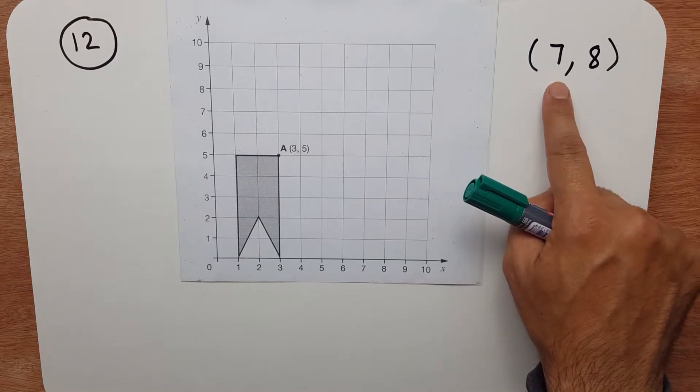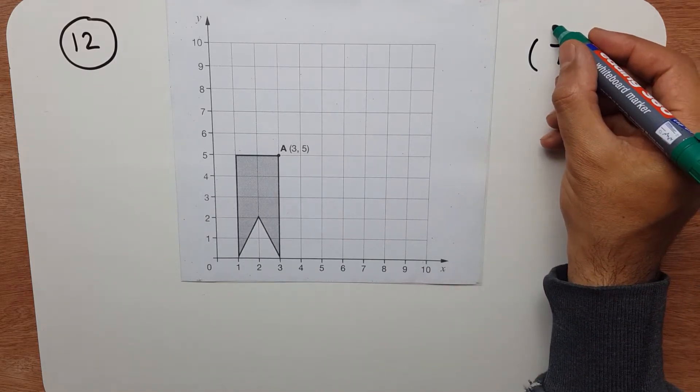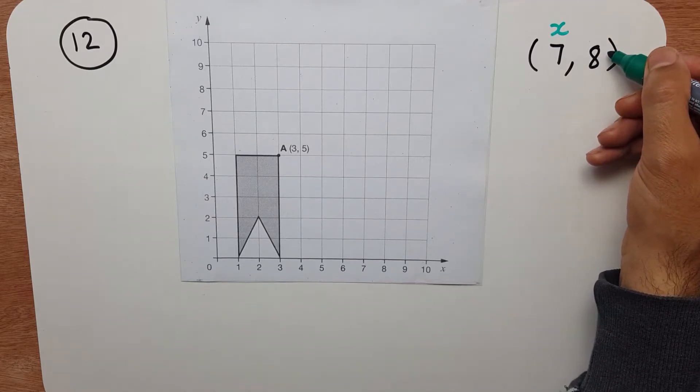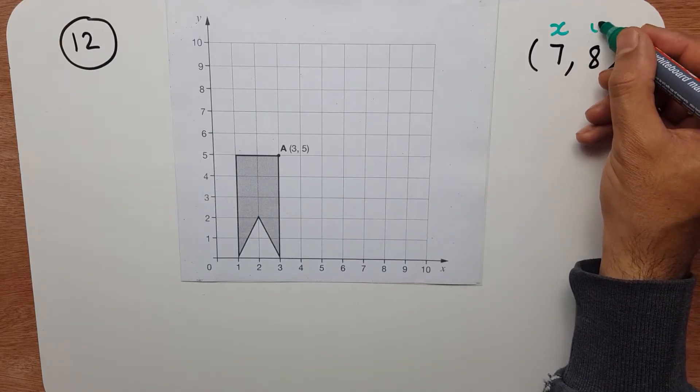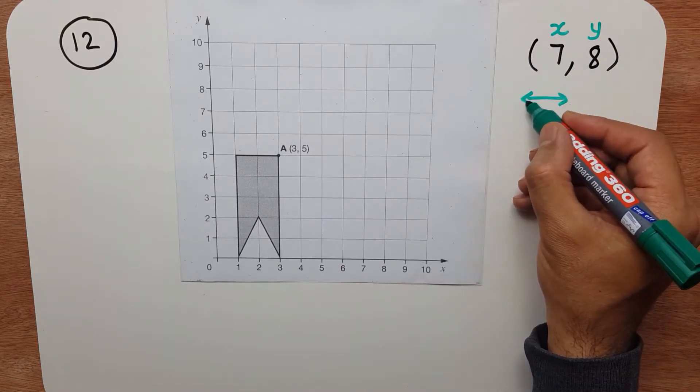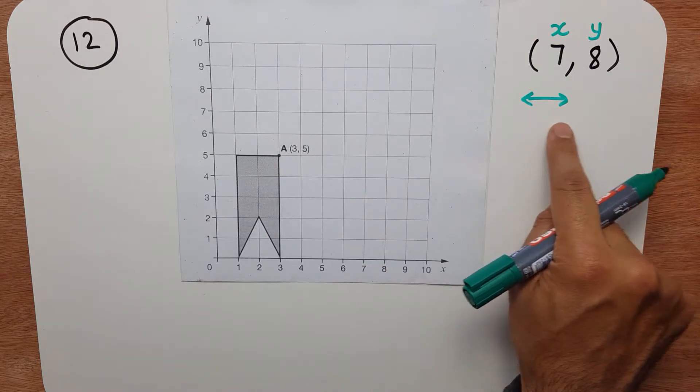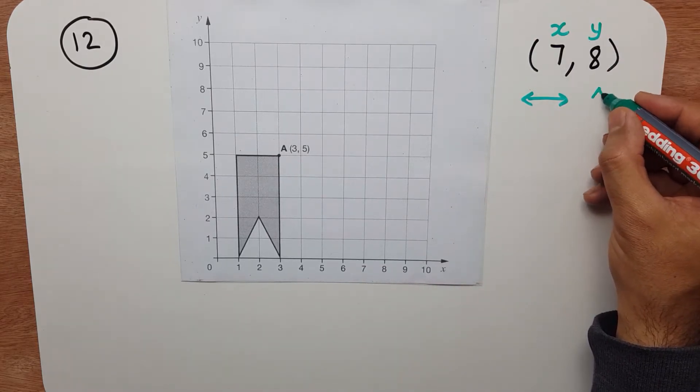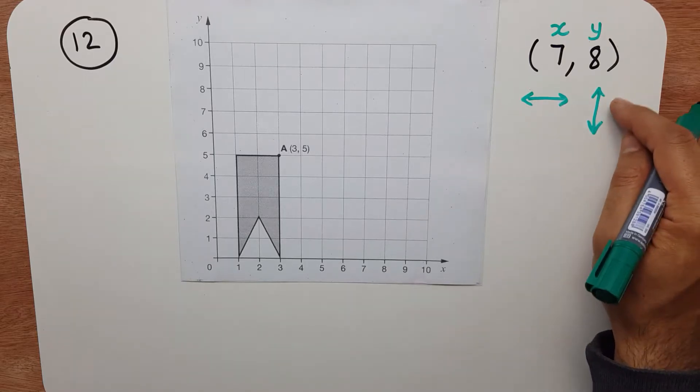And with this, the first number stands for the x-coordinate, and the second number stands for the y-coordinate. And remember x is horizontal or along, and y is up and down the page.